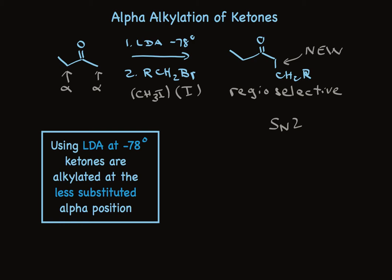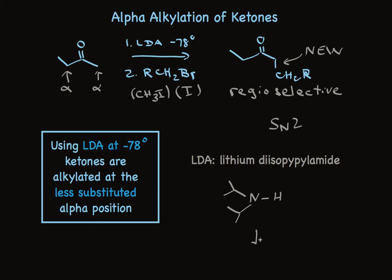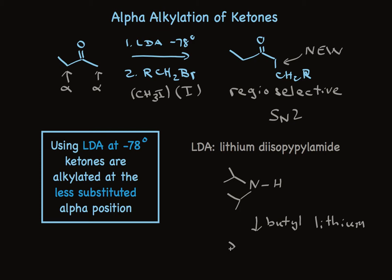So the bottom line is, using LDA — a strong base — at minus 78 degrees, ketones are alkylated with good regioselectivity at the less substituted alpha position. LDA stands for lithium diisopropyl amide. Lithium diisopropylamine is a bulky amine that isn't very acidic, but strong bases like butyllithium remove that proton attached to the nitrogen to make lithium diisopropyl amide. It's that unshared pair of electrons on nitrogen that removes the proton. It's a very strong base and a very bulky base, and the fact that it's bulky is important — that's the reason it selectively removes the less hindered alpha proton.